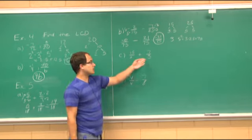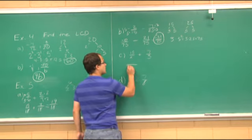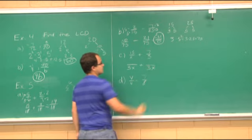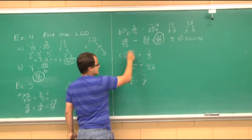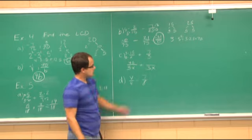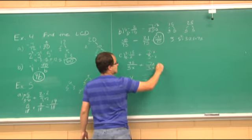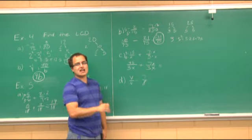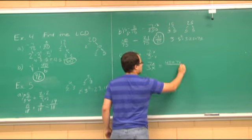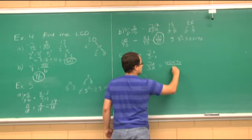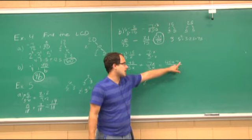Now part c: 1/(5x) plus 7/3. Using the shortcut — x and three have nothing in common, so my LCD is going to be 3x. X times three is 3x, so I multiply fifteen by three to get forty-five. Three times x is 3x, so I multiply seven by x to get 7x. When I add the numerators, they aren't like terms, so I'm left with forty-five plus 7x all over the common denominator 3x. This cannot be simplified because there is addition in the numerator, not multiplication, so I cannot cancel those x's.